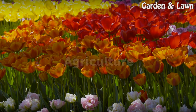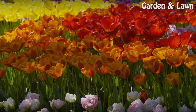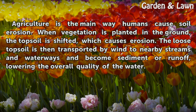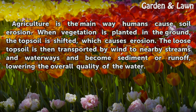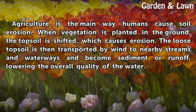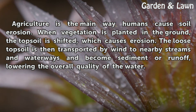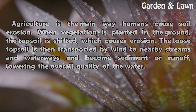Agriculture is the main way humans cause soil erosion. When vegetation is planted in the ground, the topsoil is shifted, which causes erosion. The loose topsoil is then transported by wind to nearby streams and waterways and becomes sediment or runoff, lowering the overall quality of the water.